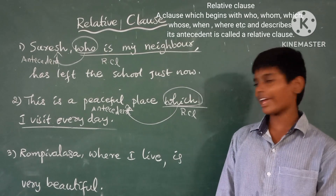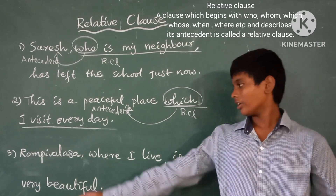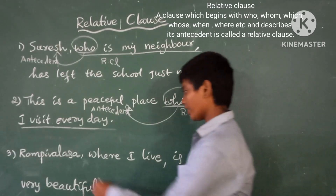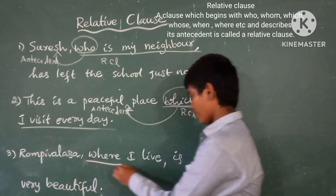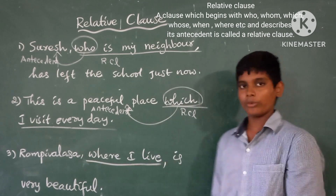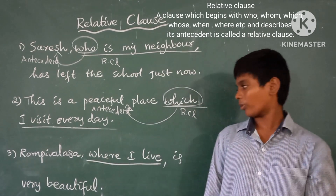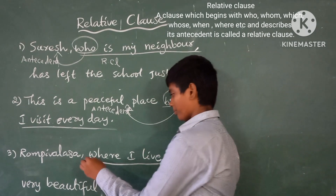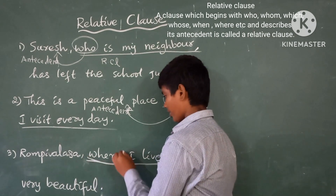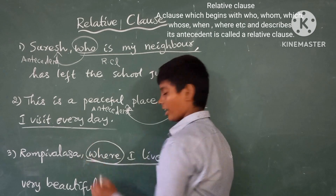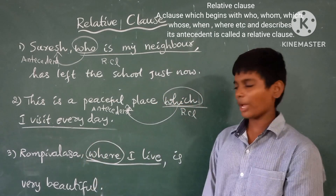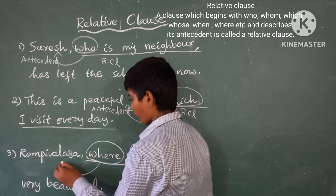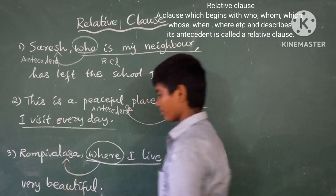Third example: Rampiwarsa, where I live, is very beautiful. Here, 'where I live' is a Relative Clause. Why? Because it begins with 'where' and describes its antecedent, Rampiwarsa.